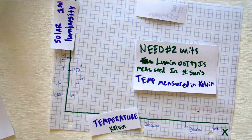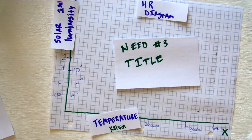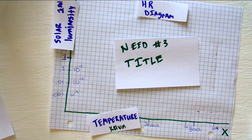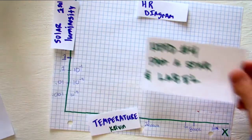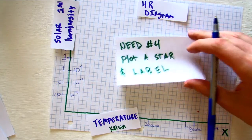Next, after you've got your X and Y axis, you're going to need a title HR diagram. And lastly, for your graph, you're going to need to plot and label some stars. So let's pick a star with temperature and luminosity and plot it in.